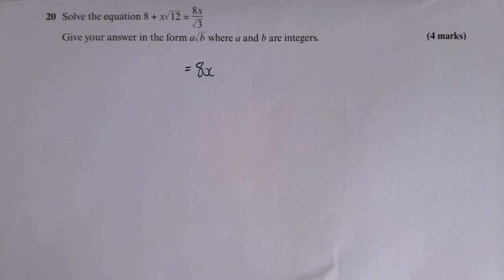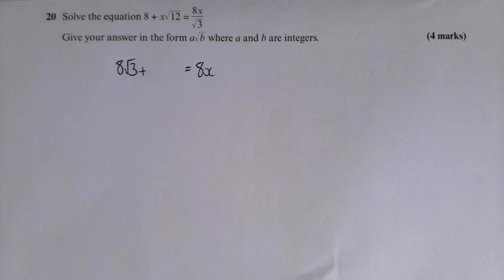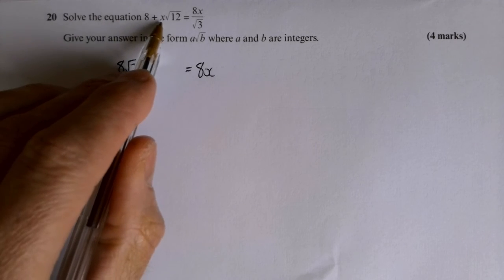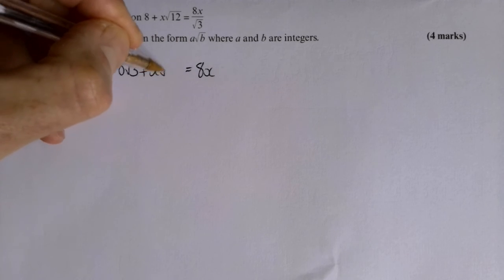And that's fine, I can do that, provided I also multiply this by root three. And I also multiply that by root three. And that gives me x times root 12 times root three. And root 12 times root three is root 36.